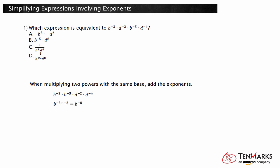Multiply the powers of b by adding the exponents, giving you b to the negative eighth power. Multiply the powers of d by adding the exponents, giving you d to the negative sixth power. So the result is b to the negative eighth times d to the negative sixth. The powers have negative exponents, so they are written in the denominator of a fraction and the exponents become positive. Since nothing is left over, a 1 goes on top of the fraction. The expression can be written as 1 over b to the eighth times d to the sixth. This is shown in choice C.